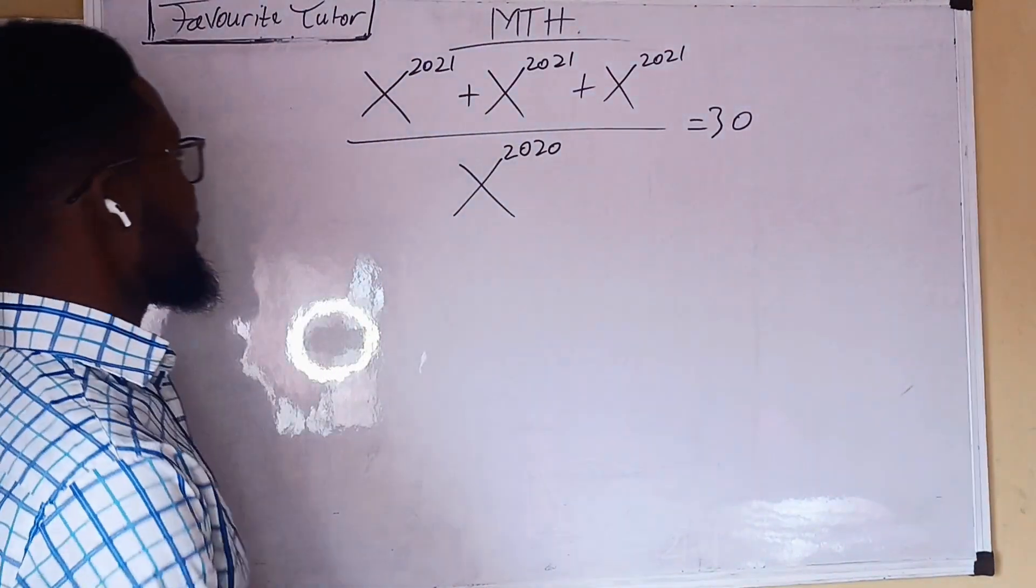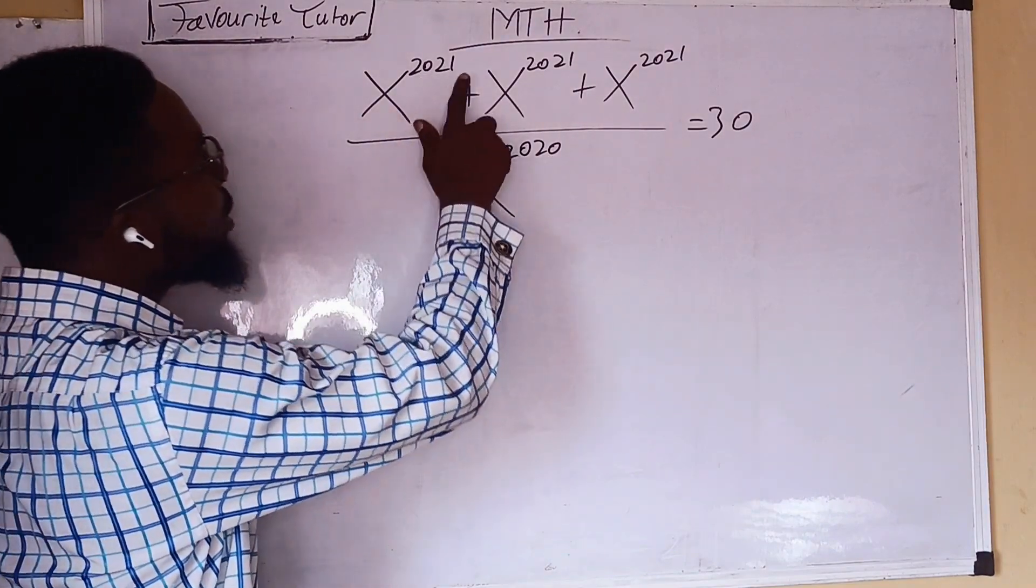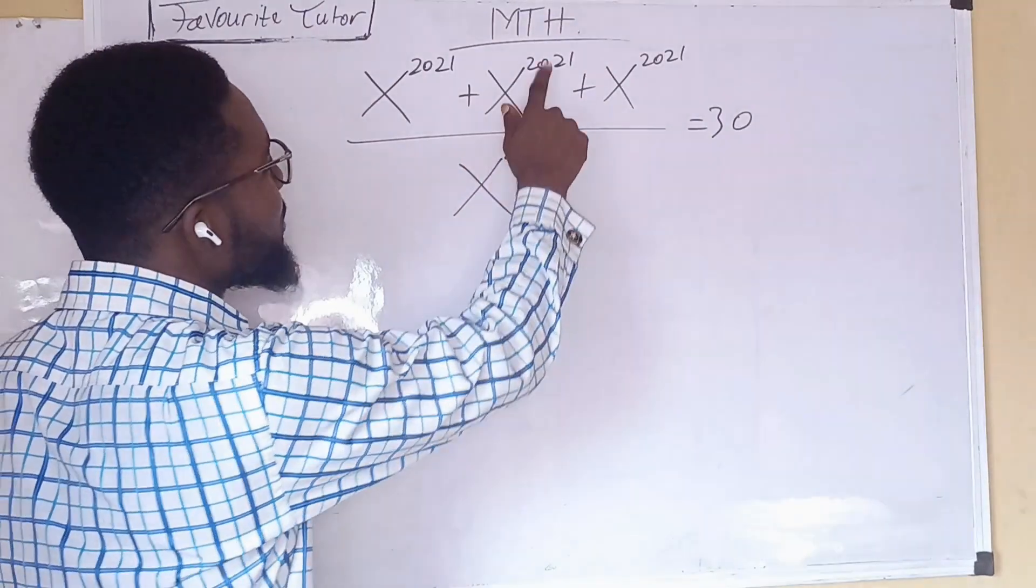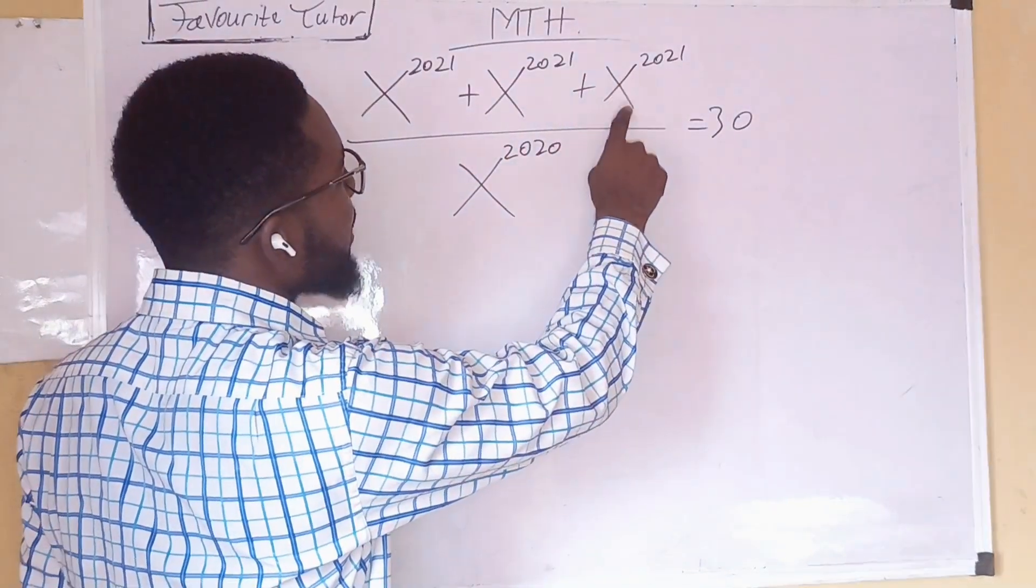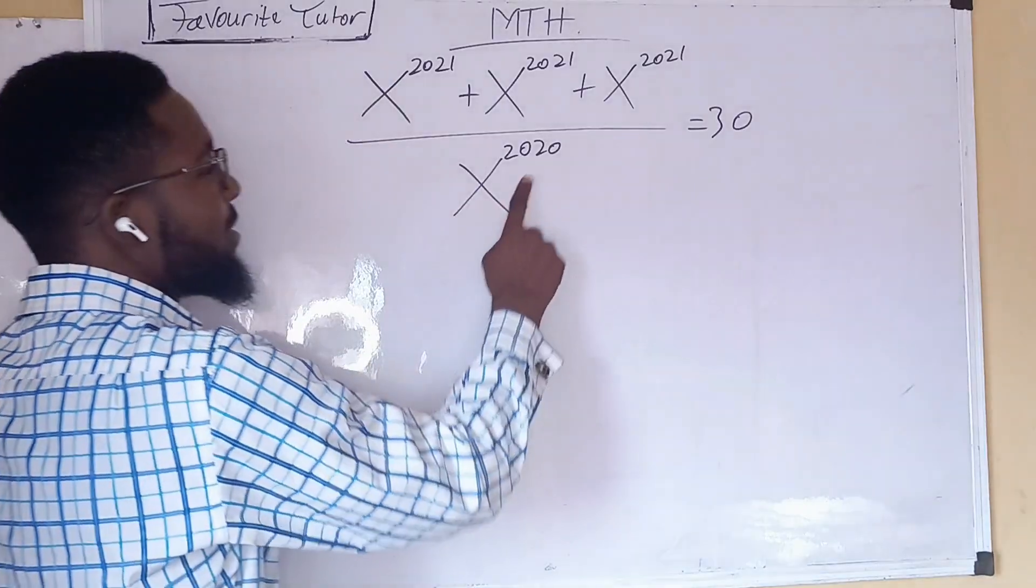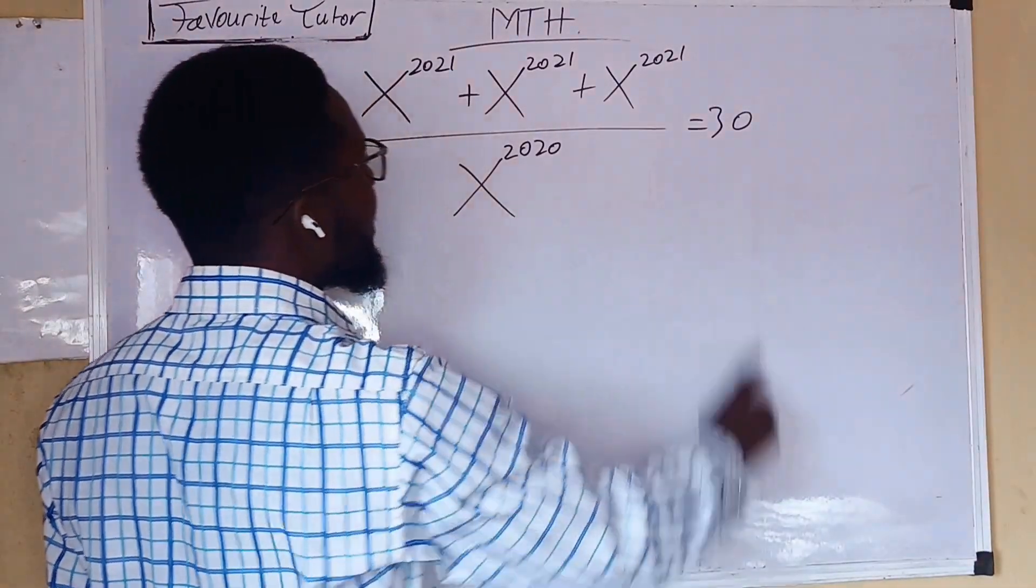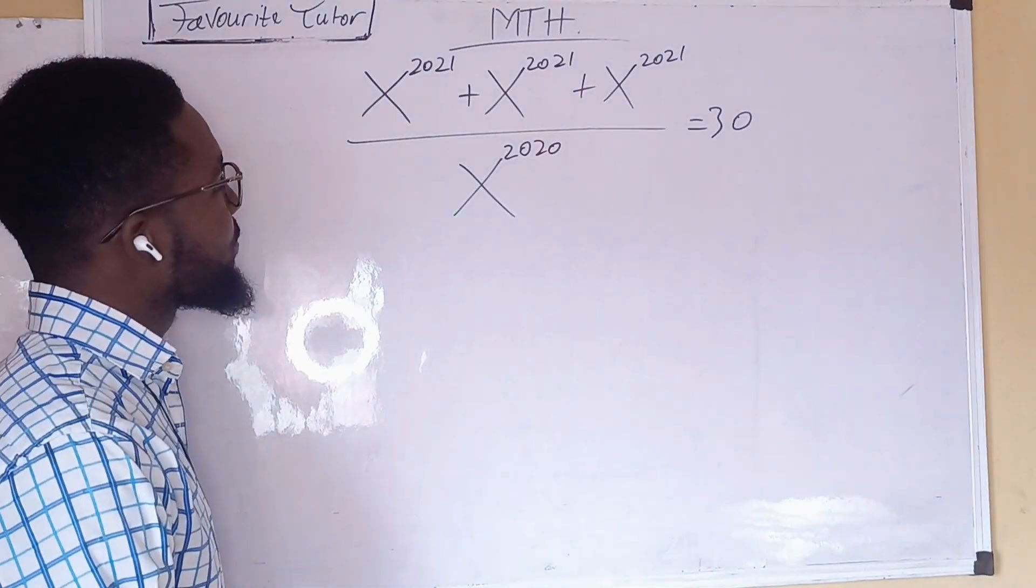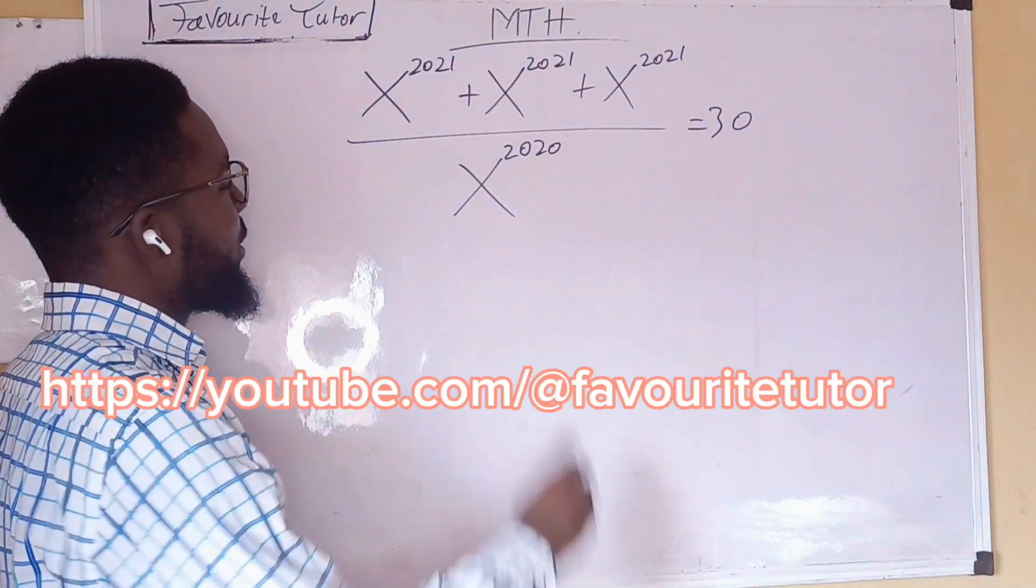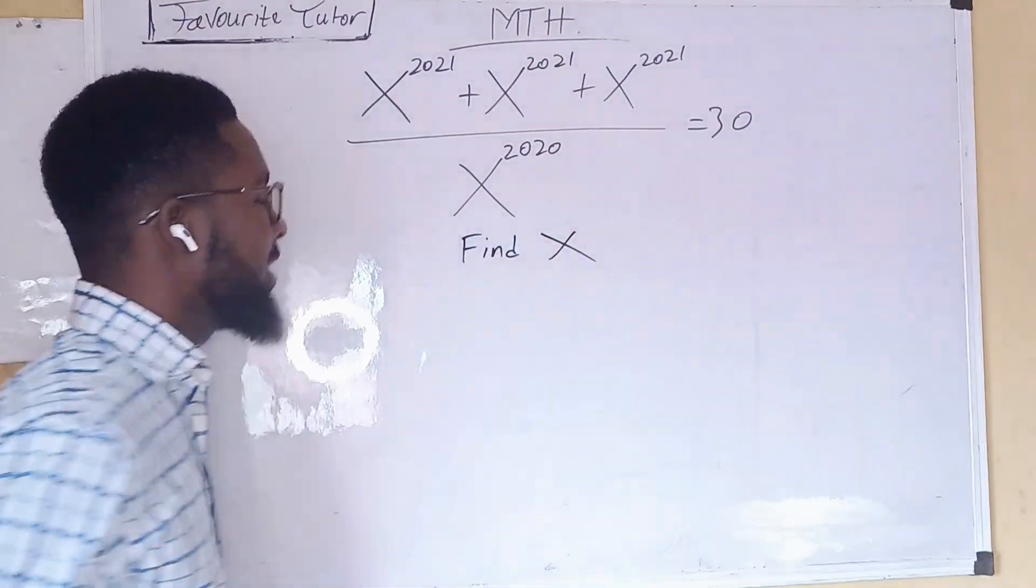This is x raised to the power of 2021 plus x raised to the power of 2021 plus x raised to the power of 2021, all over x raised to the power of 2020, equals 30. So what are we looking for? We are looking for x. Find x.